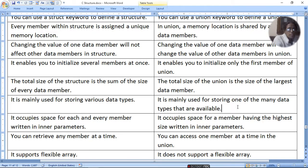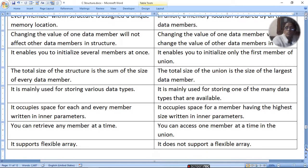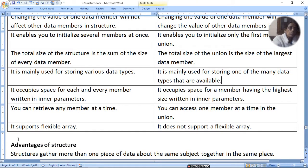You can retrieve any member at a time in structure. You can access one member at a time in the union. Structure supports flexible array. Union does not support flexible array.